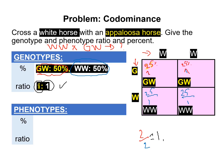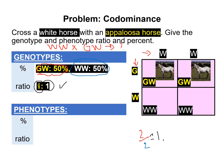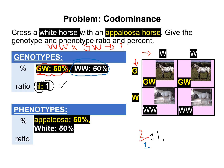Now let's answer the phenotypes. Here it will be an appaloosa, this one too based on the genotype, and here you will get a white one. So these two will be white. We have 50% appaloosa and 50% white, giving a ratio of one to one.